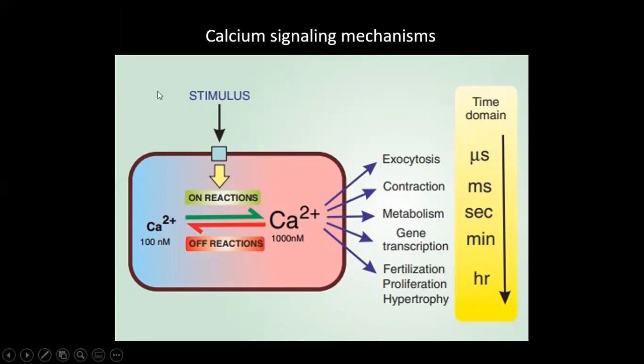When a stimulus binds to the ligand on the membrane of the cell, the ON reactions start. These ON reactions are receptors and then the associated downstream molecules, and then they are activated.